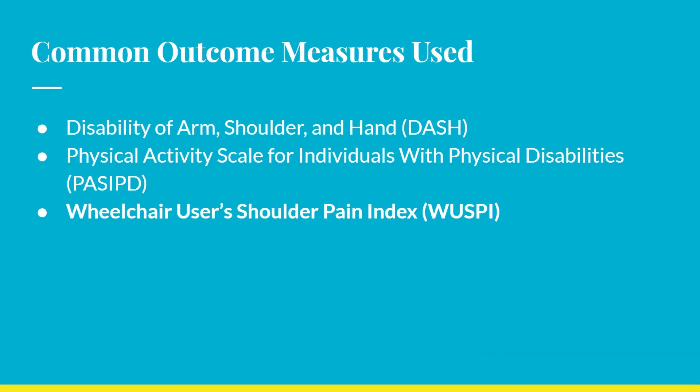Here are some commonly used outcome measures to assess shoulder function in individuals with SCI. The DASH is a good activity and participation level outcome measure. The Physical Activity Scale for Individuals with Physical Disabilities is another activity and participation level measure. Having practiced bed mobility, transfers, and navigating in a wheelchair, we should all be able to empathize with the amounts of shoulder strength, stability, and range of motion required for independent mobility. A lack in any of these may not only decrease proper function but often results in pain, especially with repetition of poor quality movements.